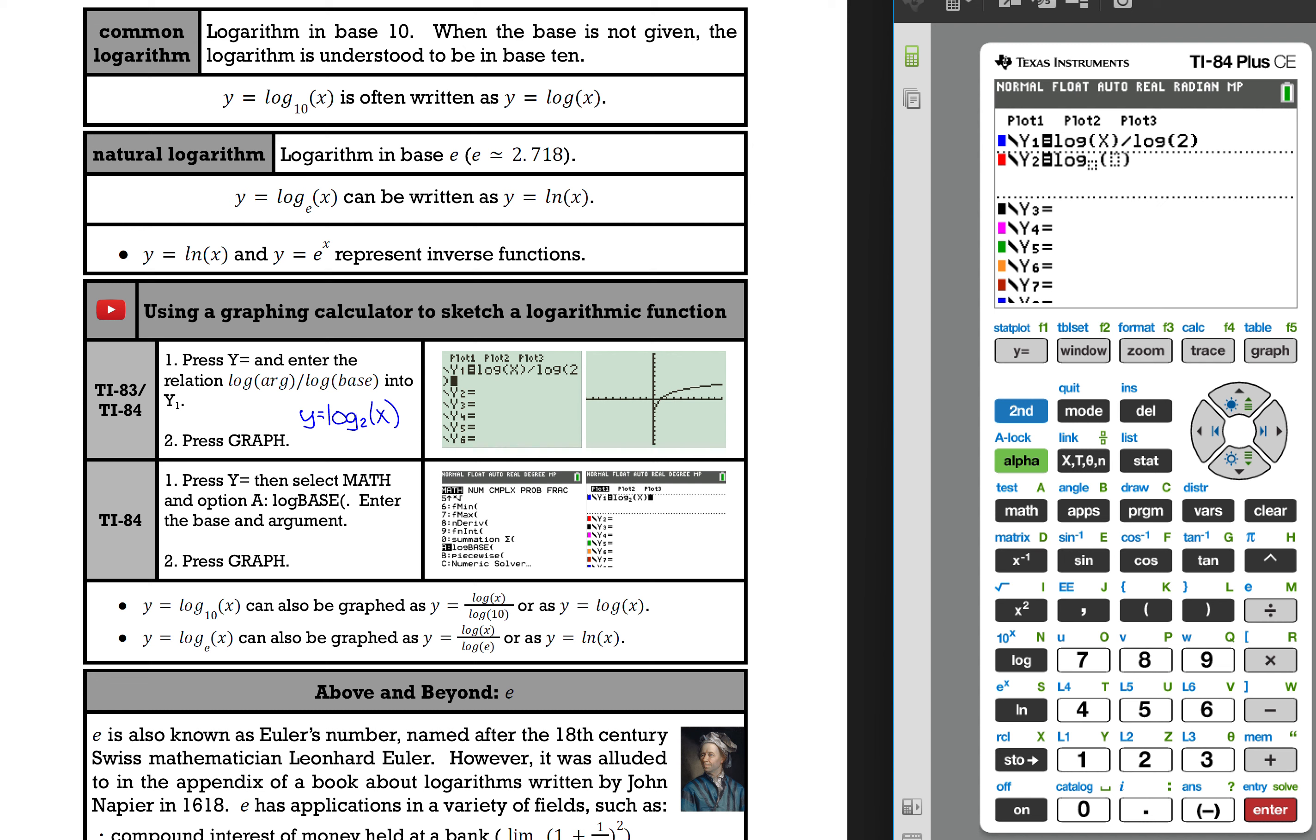Here it actually prompts me for the log base which here is 2. Then I can push the right arrow to get to the argument which is x. When I hit graph you can see my red graph is going to overlap with my blue graph, and that shows us we have two different ways to graph the same function.